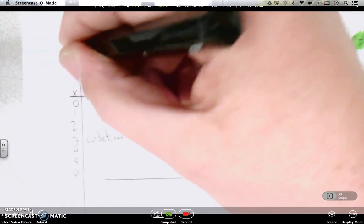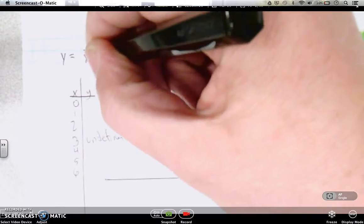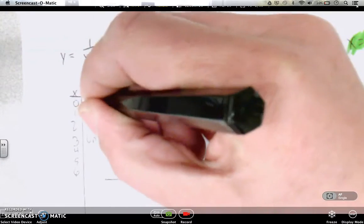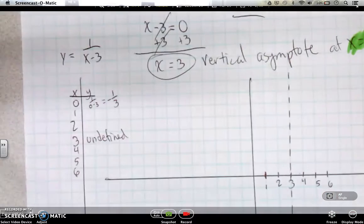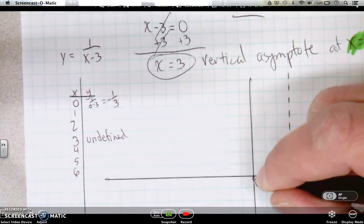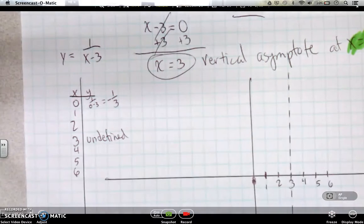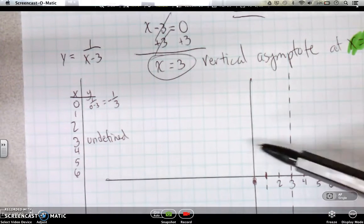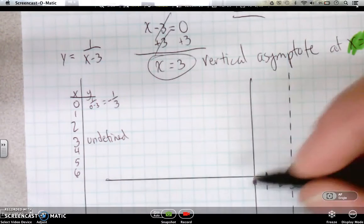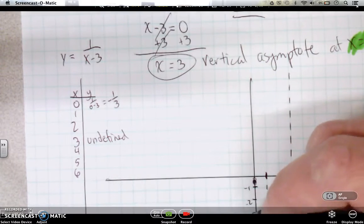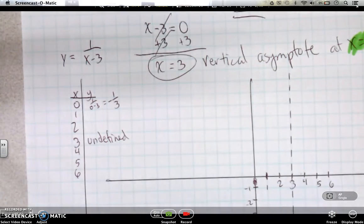So let me rewrite our original equation again. 1 over x minus 3. So when we plug in 0, we get 1 over 0 minus 3 or negative 1 third. That tells us something. At 0, we've got to go down negative 1 third. So that's our first point. 0, negative 1 third. Because here's negative 1, negative 2, negative 3. It's only a third down.